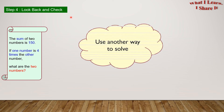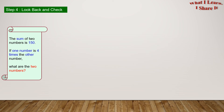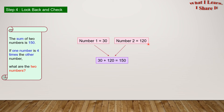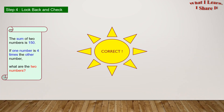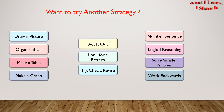Step 4: Look back and check. Let's use another way to verify. If number one equals 30 and number two equals 120, then 30 plus 120 equals 150, which confirms the sum of the two numbers. Our answer is correct — yay, we solved the problem!